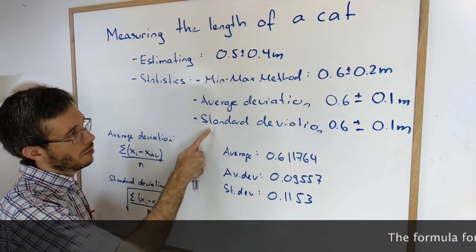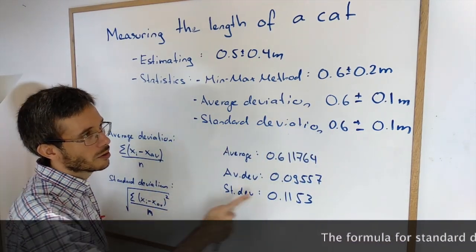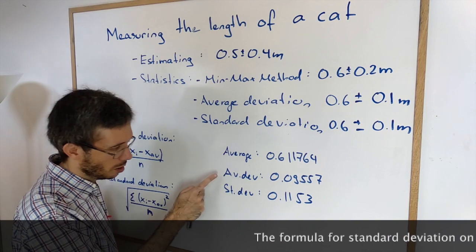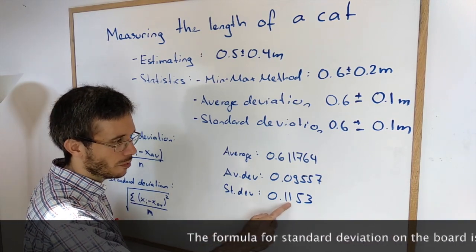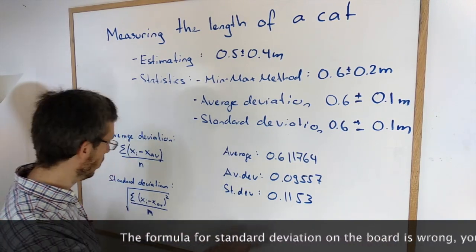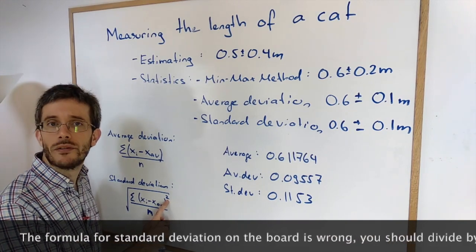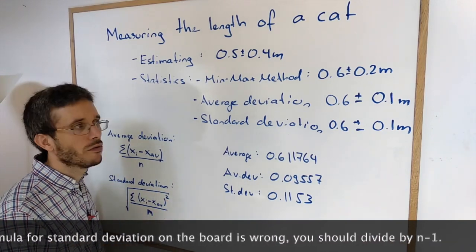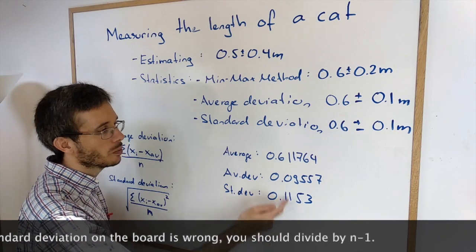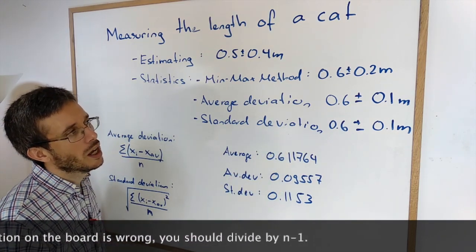However, if I look at average and standard deviation I get much lower uncertainties here. With 1 sig fig the same value. But it looked like standard deviation would have given me a bit of a higher value. Why? Because we square the difference from the average. So outliers have a bit of a bigger impact. But in this case here it didn't make any difference.